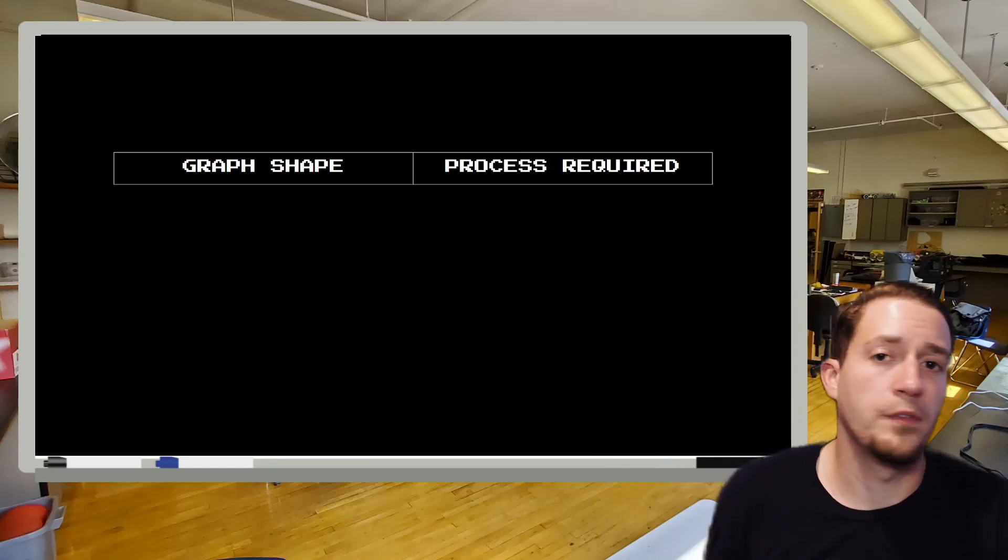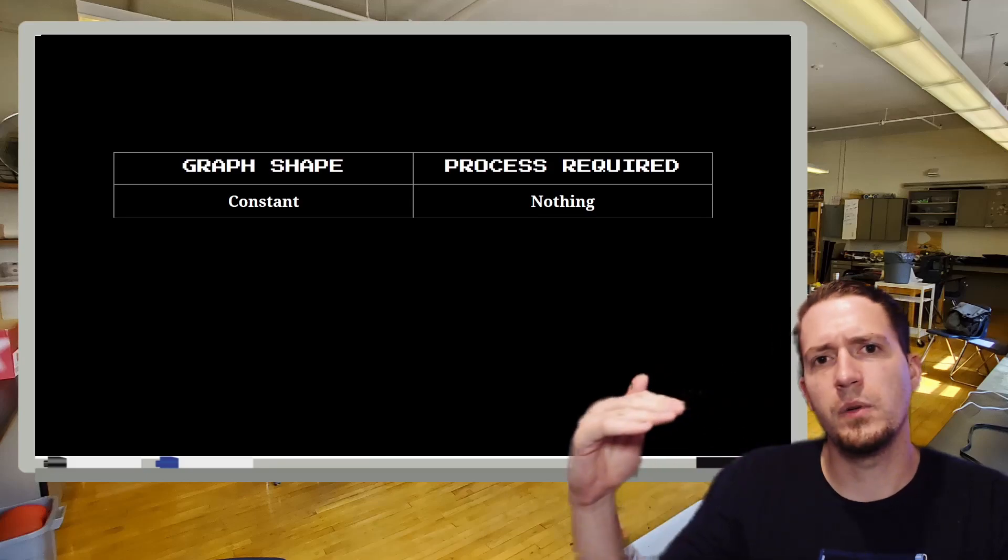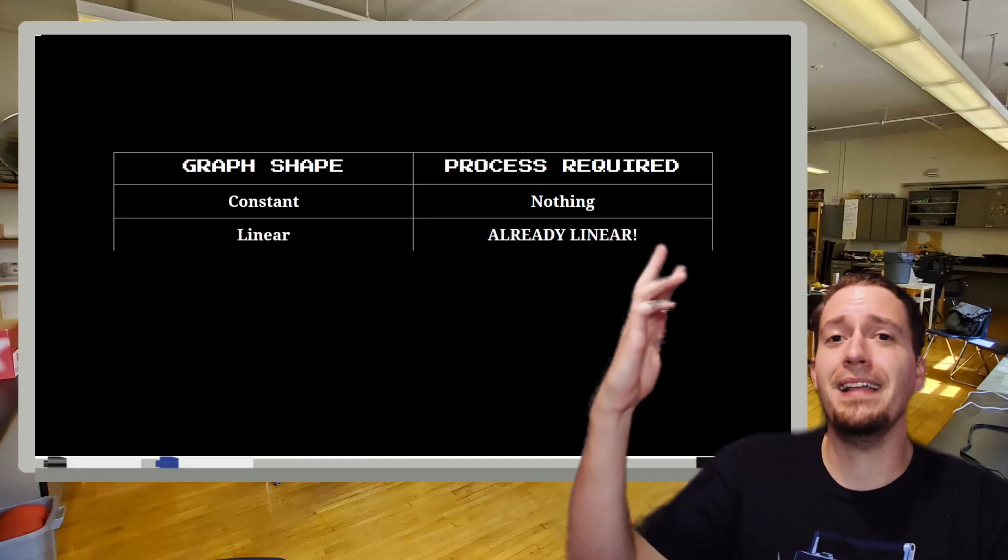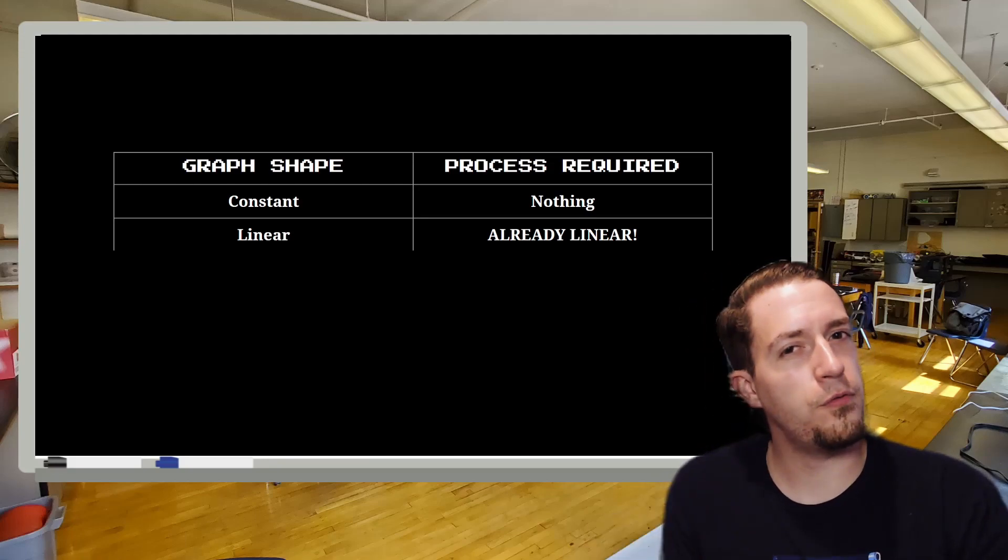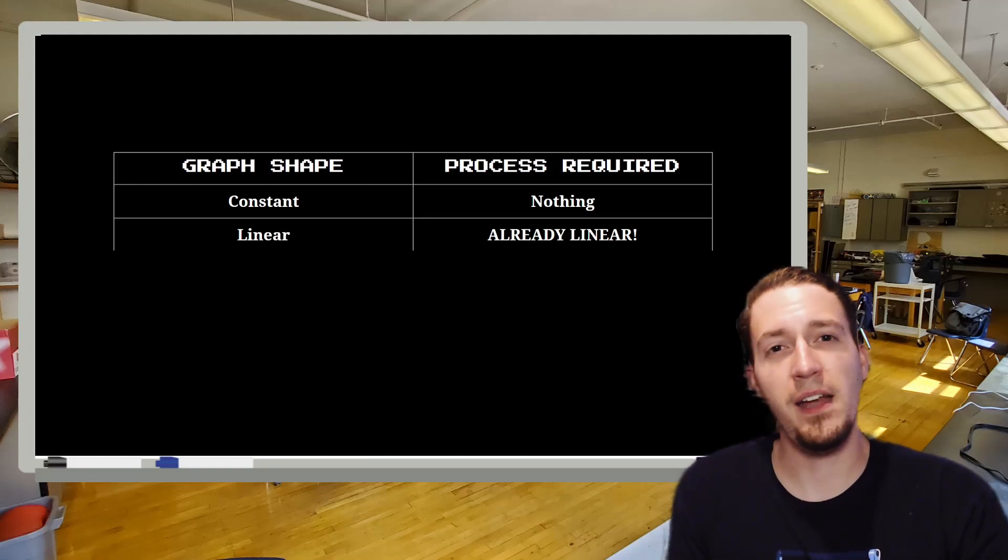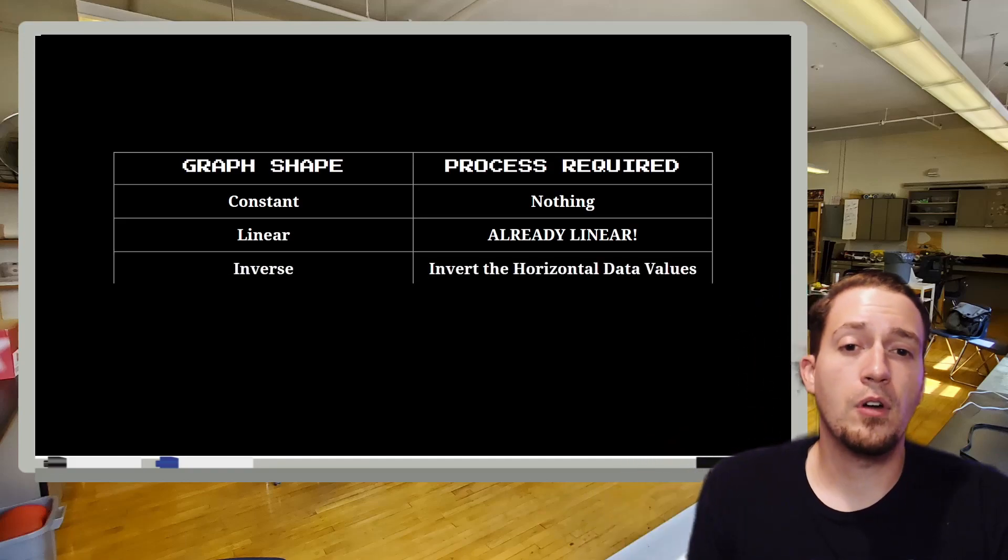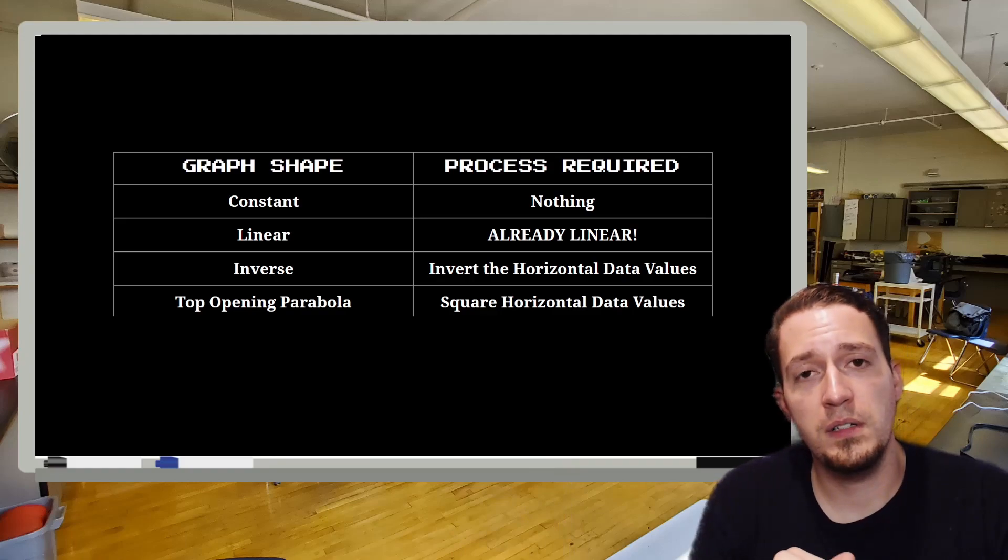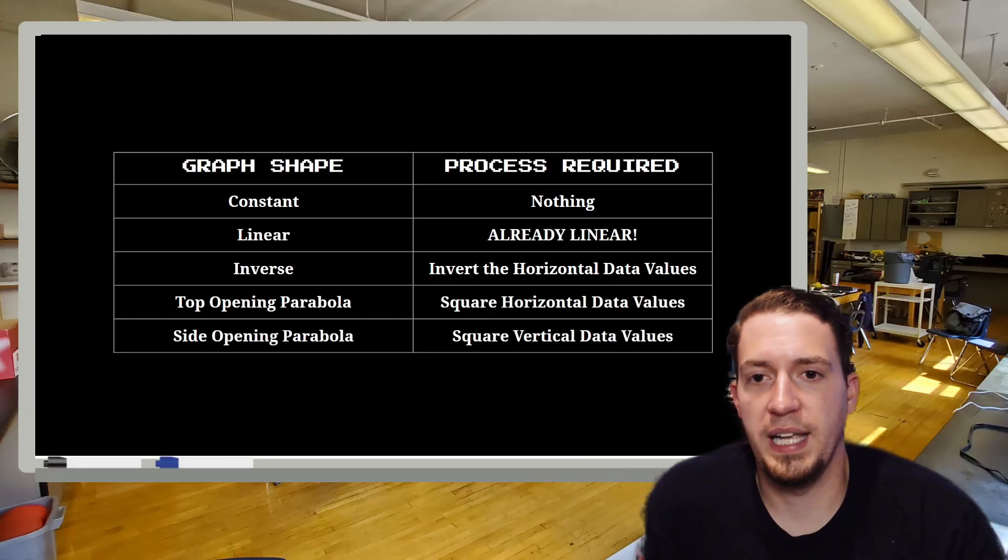Now, what are we going to do depending on the different graph shapes that we get? Well, if we have a constant graph shape, we're not going to do anything, because that's already a linear relationship. Or some people would even say no relationship. So it's not worth our time. If we have a line, it's already linear, you don't linearize lines. Just like you don't freeze ice, it's already there. If we have an inverse relationship, the easiest way to linearize that is actually to invert all of the horizontal data values. Top opening parabola, we're going to square all the horizontal data values. And then side opening parabola, finally, we'll square all the vertical data values.